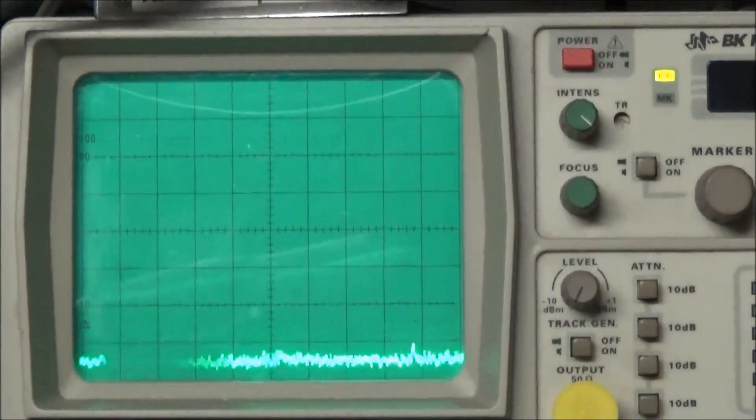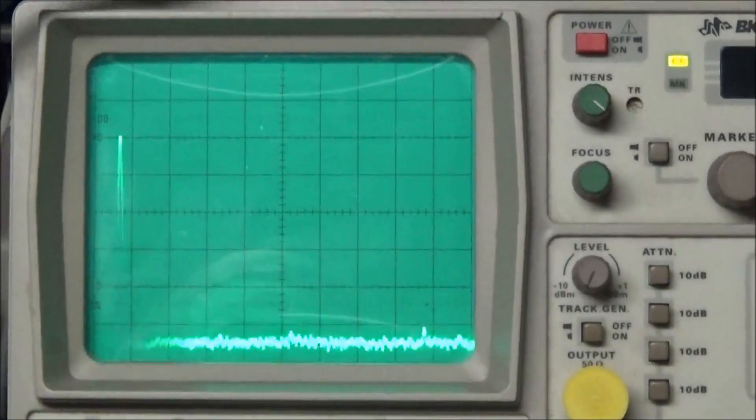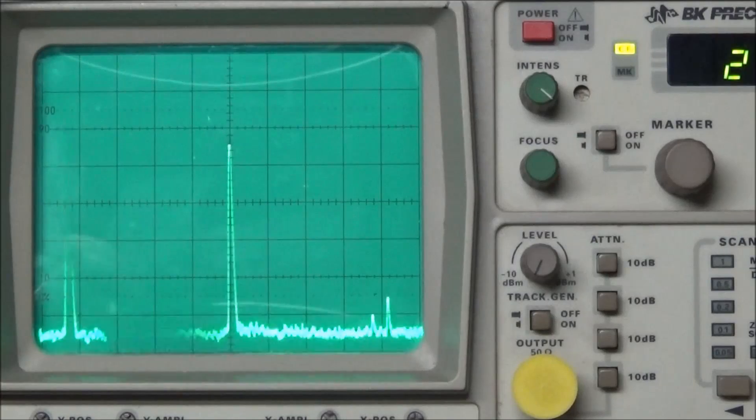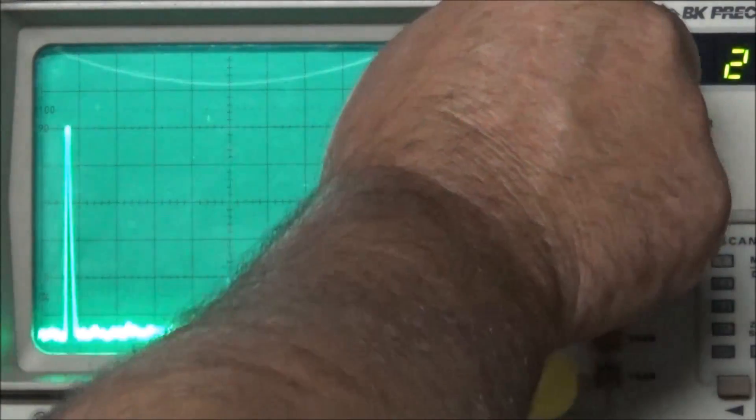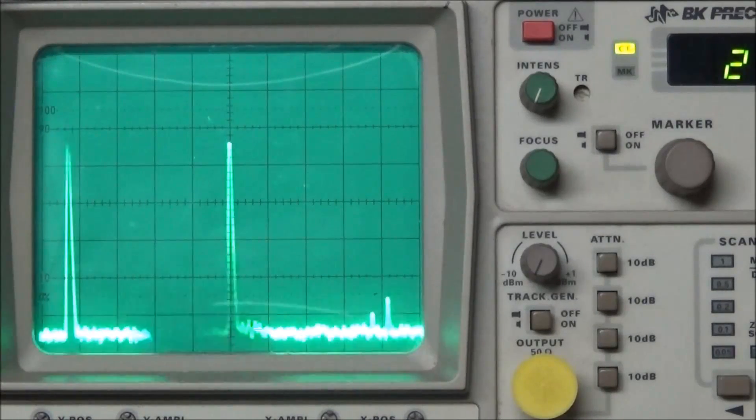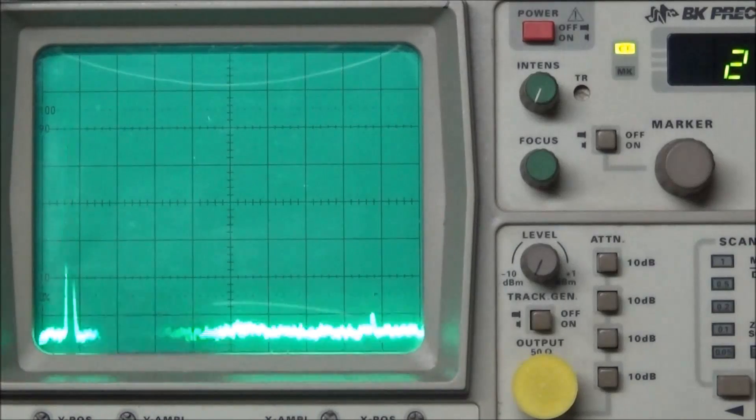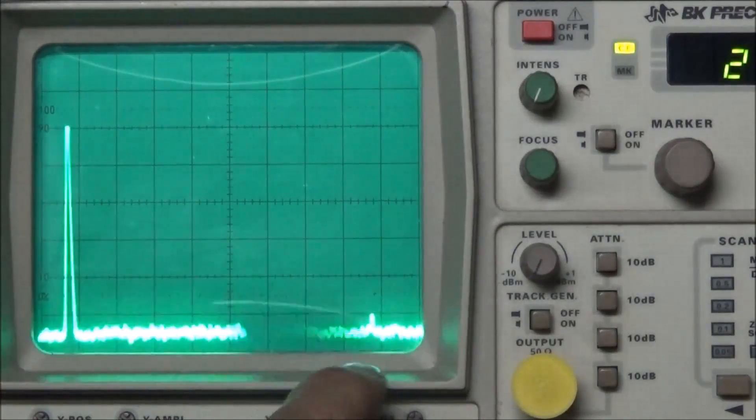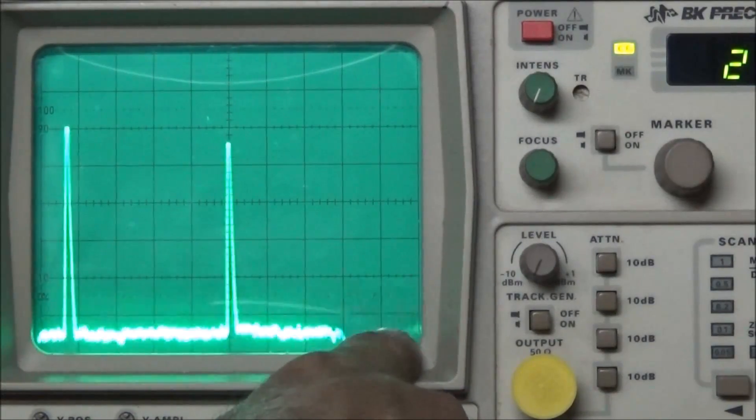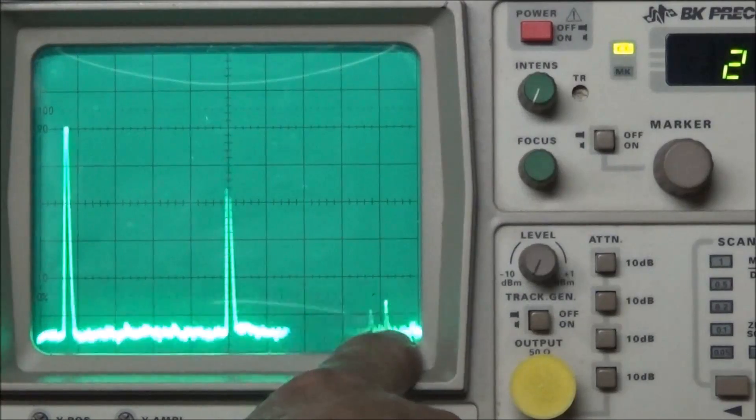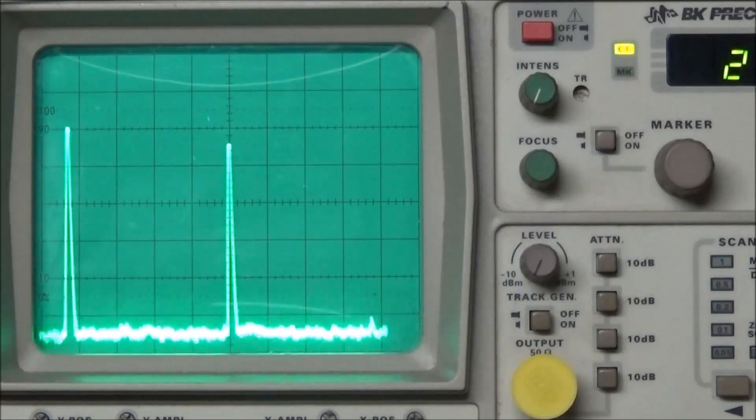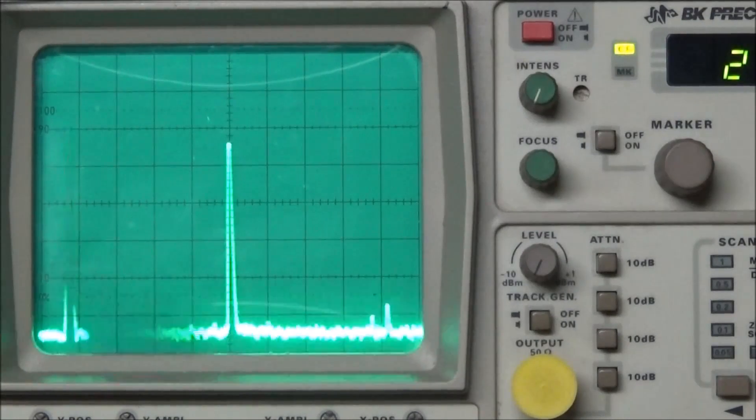So I have just a plain simple CB sitting here on the bench. When we key the mic and turn the intensity up just a bit, you can see our 27 megahertz carrier and also over on the right hand side you can see our 54 megahertz carrier that's coming out of the radio. We can calculate and figure out if that's where it needs to be whenever you're tuning up a radio.